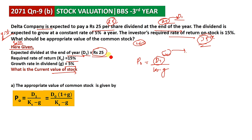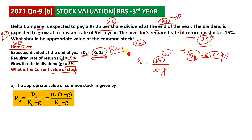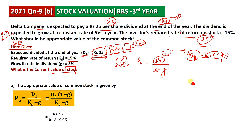Since the dividend is given as a future value — at the end of the year — D1 equals 25. The required return Ks is 15% and the growth rate g is 5%. Using the formula P0 equals D1 divided by Ks minus g, we can solve.